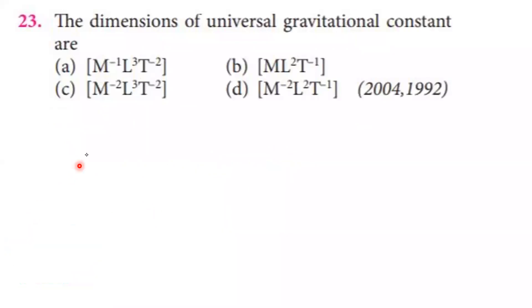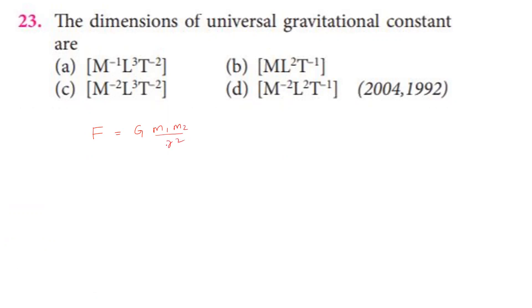Next question: the dimensions of universal gravitational constant. From Newton's law of gravitation, force F equals G times M1 times M2 divided by R squared, giving units MLT⁻².